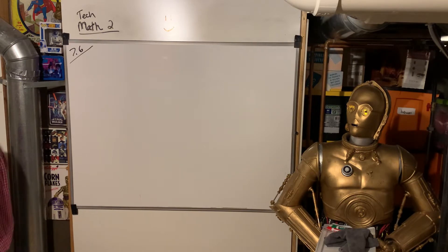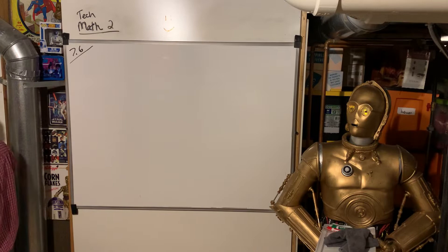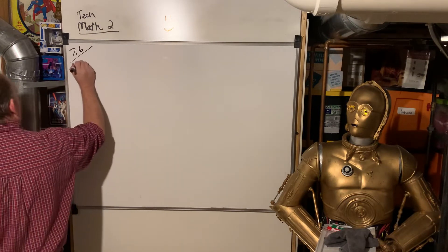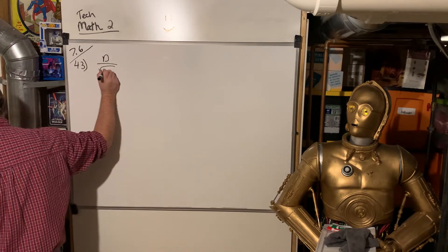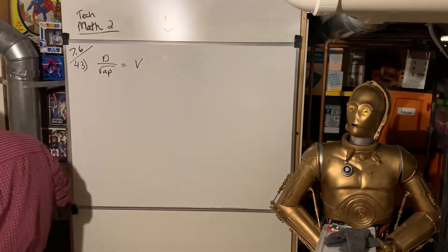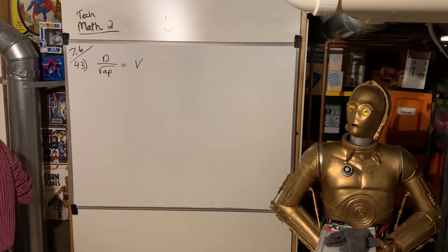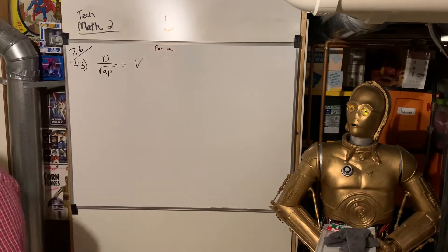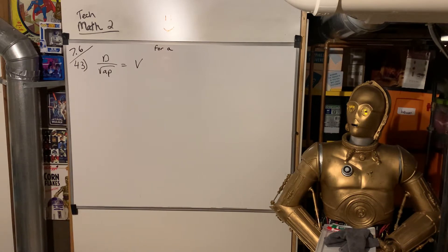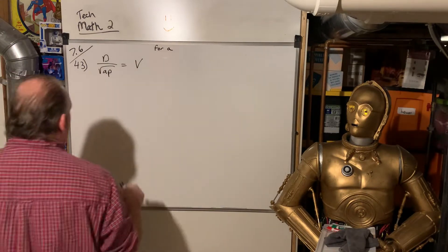So on 7.6, same kind of thing. We have D over the square root of AP equals V. And they want us to solve for A. They have to tell you what to solve for because there's so many variables in here. If there was only one variable, it's obvious what to solve for. But because these are all variables, they have to identify which one you want to isolate.